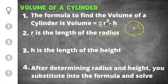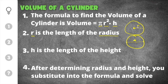Sometimes a problem will give you the diameter, and the diameter is the distance from one edge of the circle all the way to the other — it is the length across the entire circle. If they give you diameter you have to change it into radius by dividing by two, because the radius is half the length of the diameter. Radius goes from the center to the edge, while diameter goes from one edge all the way across the center to the other edge.